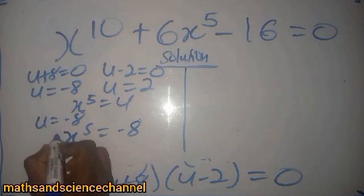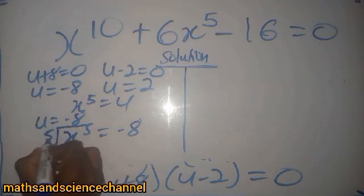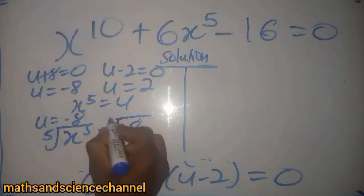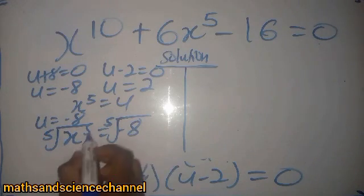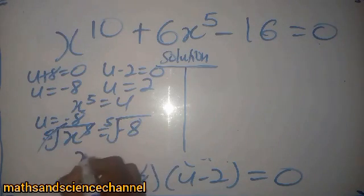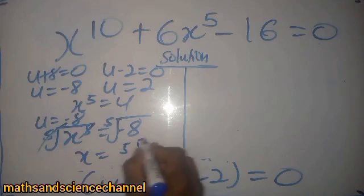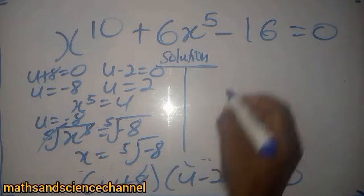How do we get x here? So, we put the fifth root on both sides. This will get rid of that, and then we have x here being equal to the fifth root of negative 8.